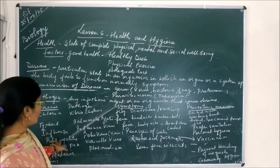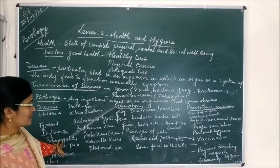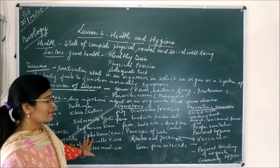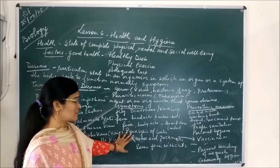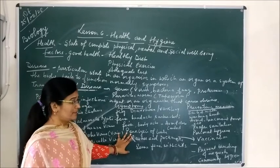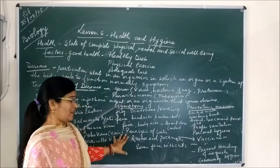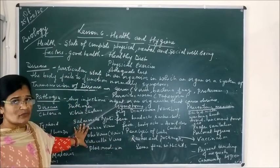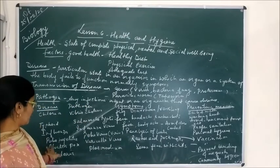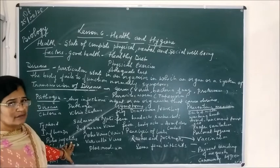Another disease is poliomyelitis, which is caused by poliovirus. The main symptom is paralysis of the limbs. This disease can be prevented by vaccination. Small children, especially at the age of 1 to 5 years, are vaccinated against the poliovirus to prevent polio.